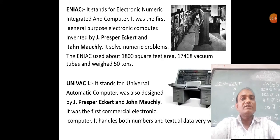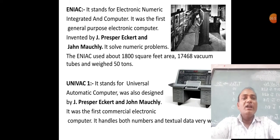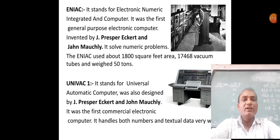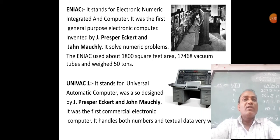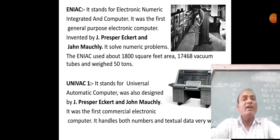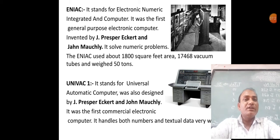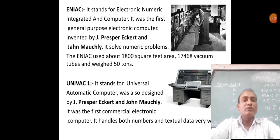The next calculating device is ENIAC. ENIAC stands for Electronic Numerical Integrated and Computer — E for Electronic, N for Numeric, I for Integrated, and C for Computer. It was the first general-purpose electronic computer, invented by J. Presper Eckert and John Mauchly. This ENIAC solved numeric problems.